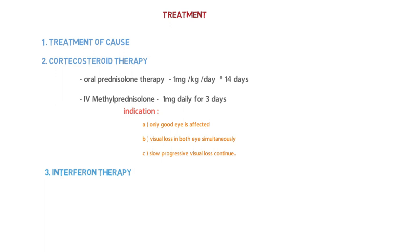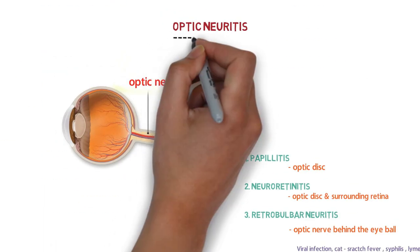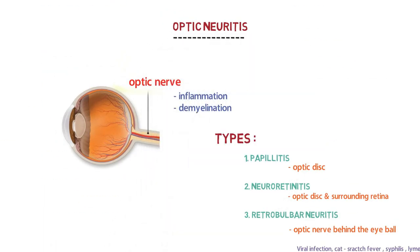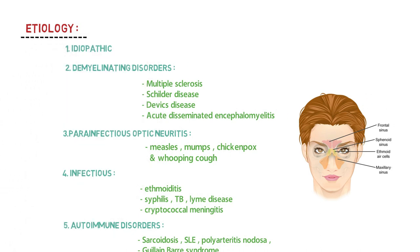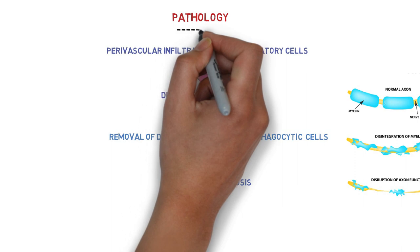This is all about optic neuritis in which we learned what is optic neuritis, what are the types - papillitis, neuroretinitis, and retrobulbar neuritis. Then we looked at etiology: idiopathic, demyelinating disorders, para-infectious optic neuritis, infectious disorders, and autoimmune disorders. Then we took a look at pathology behind optic neuritis.